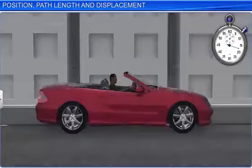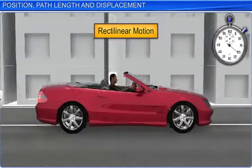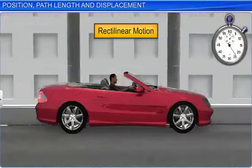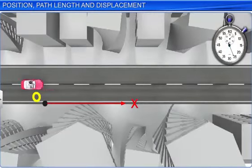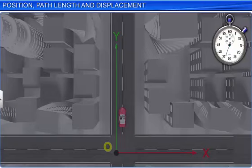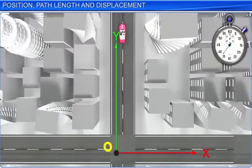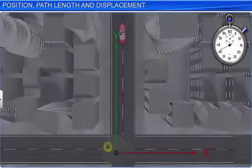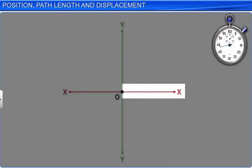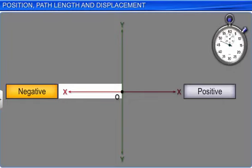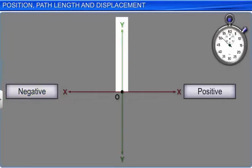Let us examine rectilinear motion more closely. To study the motion of a body along a straight line, we align the straight line along one of the axes, usually either the X axis or the Y axis, and then choose a convenient origin O. Positions to the right of O are taken as positive and to the left of O as negative. Positions above O are taken as positive and below O as negative.